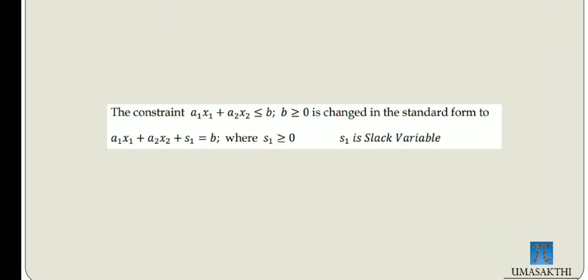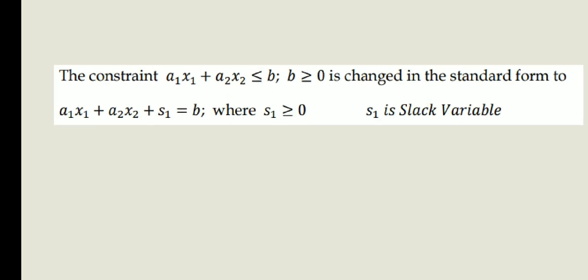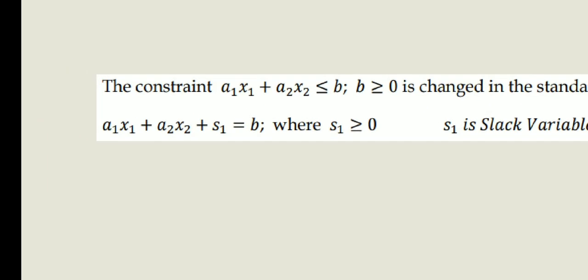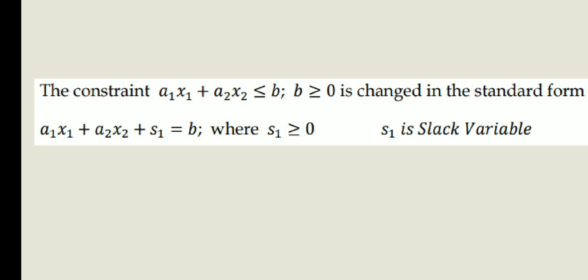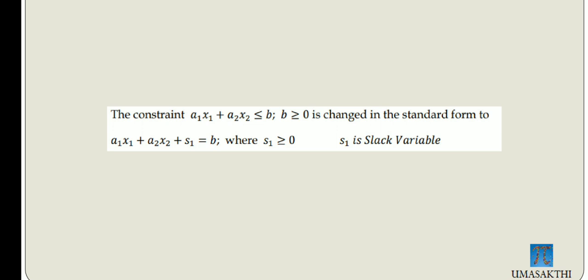Now we have the standard form equation. A1x1 plus A2x2 less than or equal to b, where b is greater than or equal to 0. We change it to: A1x1 plus A2x2 plus S1 equals b, where S1 is greater than or equal to 0. S1 is the slack variable — it is added to the left-hand side of a less-than-or-equal inequality.